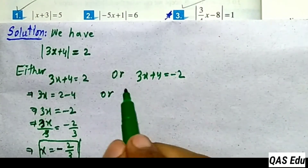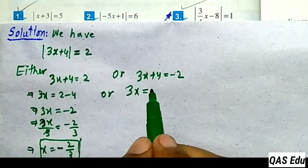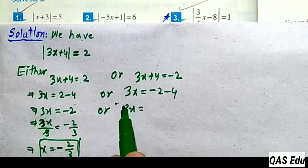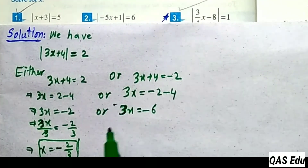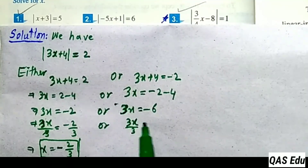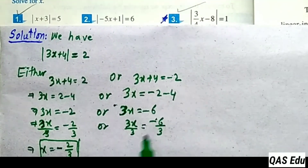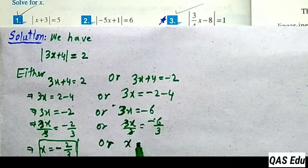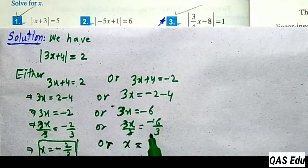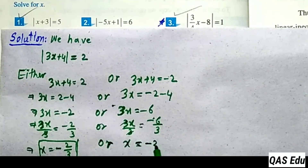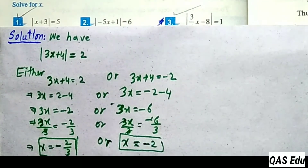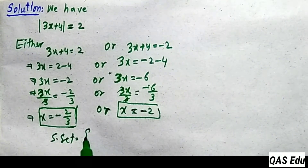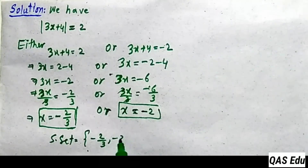For the second equation, 3x plus 4 equals minus 2. Move plus 4 as minus 4: minus 2 minus 4 gives minus 6. Dividing both sides by 3: 3s cancel, minus 6 divided by 3 gives minus 2. The solution set has two numbers: minus 2 over 3 and minus 2.